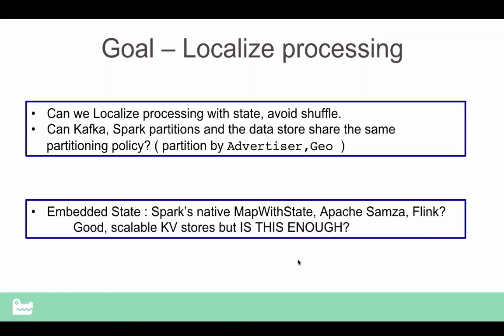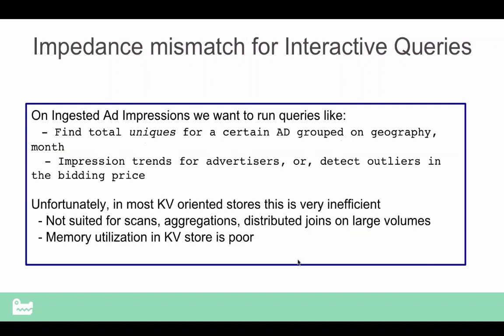Apache Flink and similar systems also support some way of managing state inside the stream processing layer. But the question is whether scalable key-value stores are really good enough. Looking more closely, we find it's not enough for end applications to simply say 'give me a key, give me my aggregated value back.' Those are simplistic apps. Most often now, these apps are running on something like Tableau or QlikView and want to visualize results.